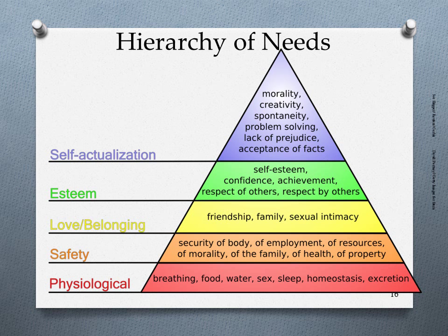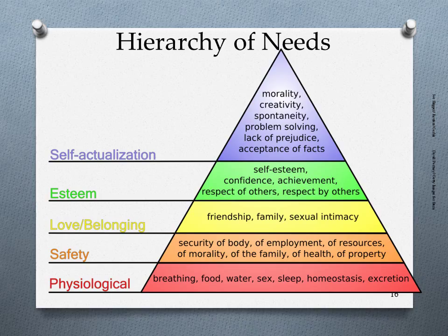Stop and copy this pyramid down, knowing what each level is. Physiological is first — we need basic survival needs like sleeping, eating, and breathing before worrying about the next level: safety. If you're so hungry or tired, you won't care about your environment. Safety covers your body, family, health, property, and resources. Once safety is met, you can worry about friendships, relationships, and being part of a group — the belonging level. If you're so worried about food and water, you won't worry about having friends.